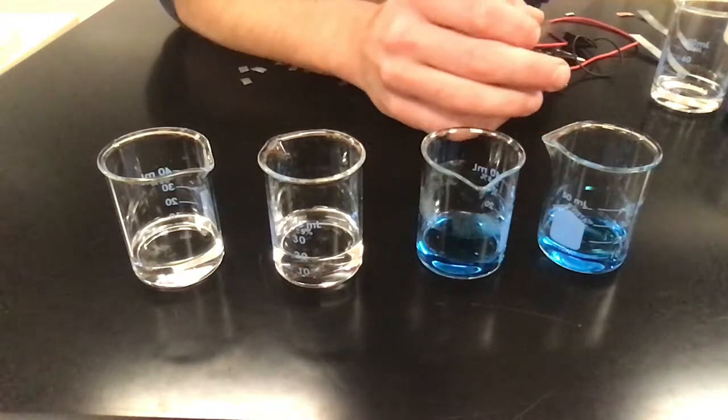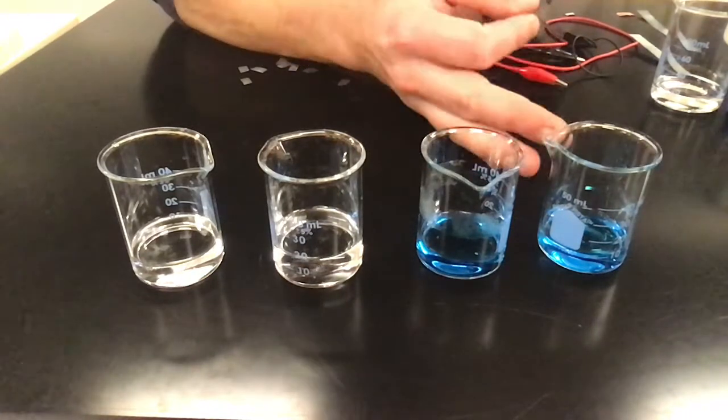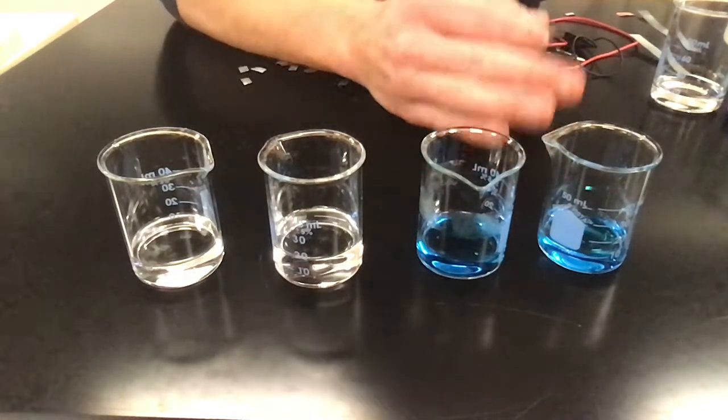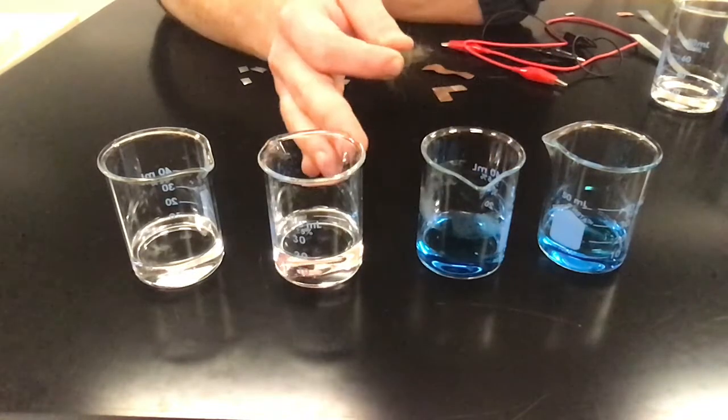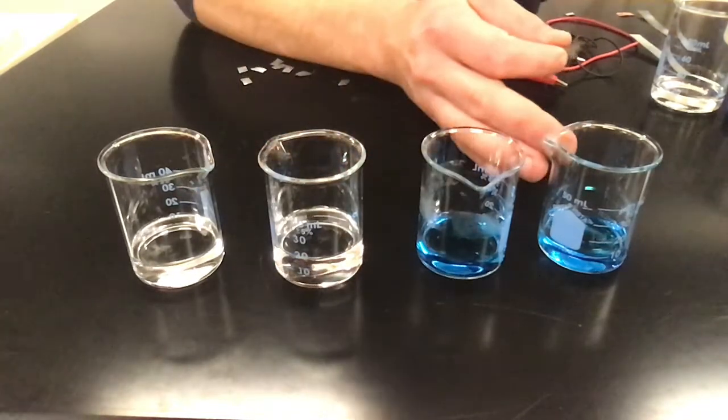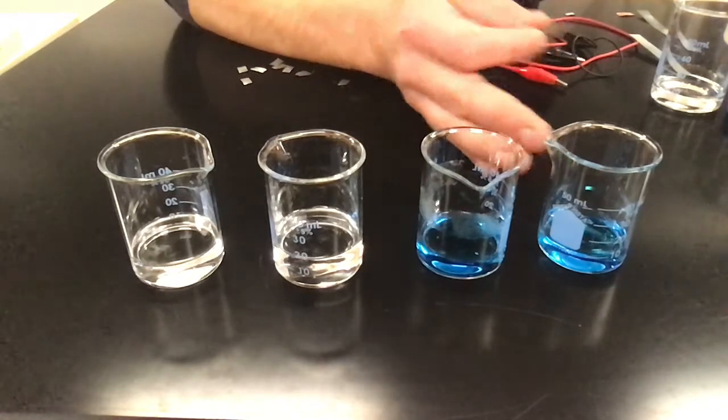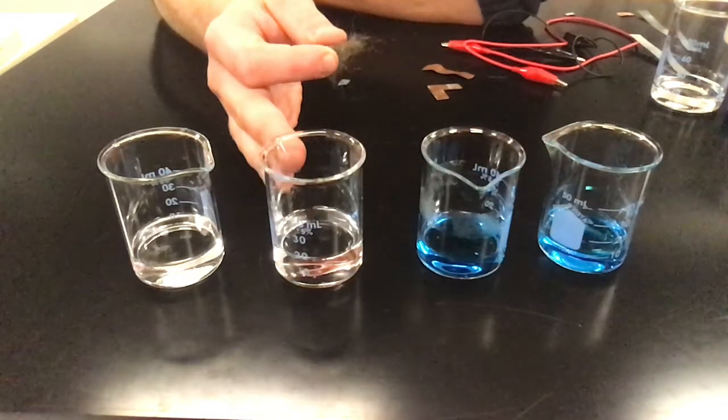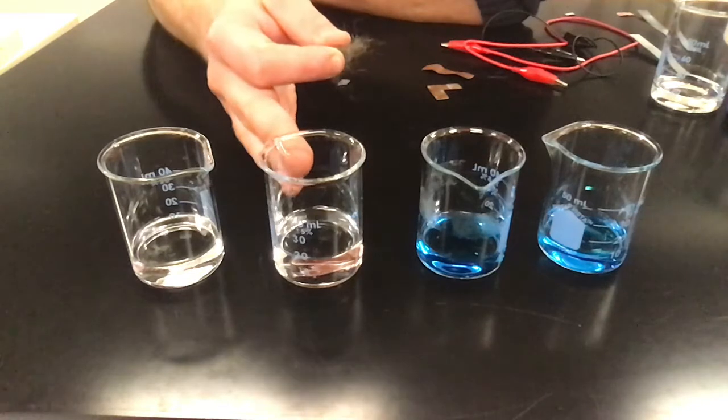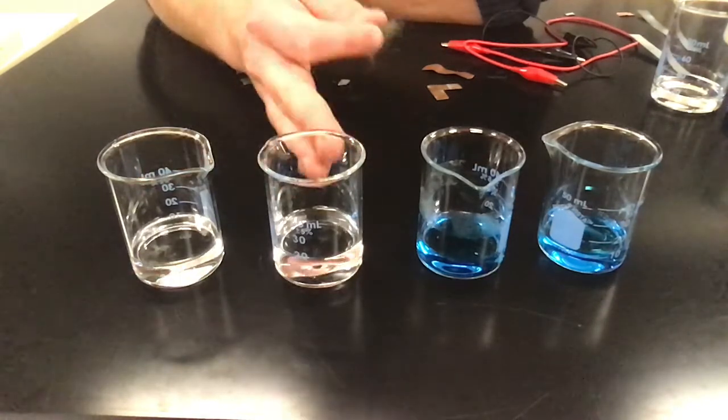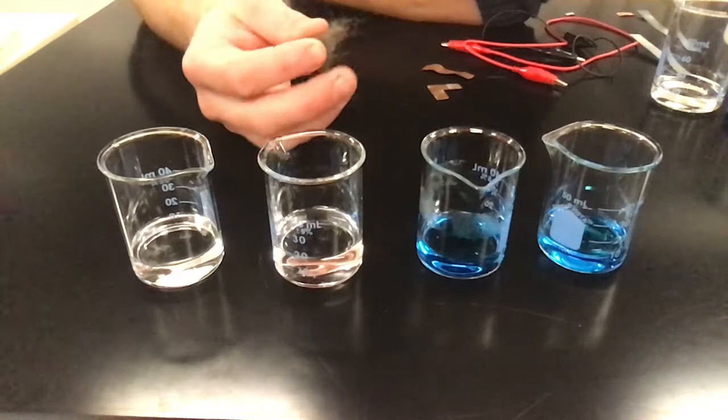These two over here, they might look familiar to you. That bluish color is a pretty good indicator. We have two copper solutions and two zinc solutions. Here we have copper sulfate, copper 2 sulfate, one molar of each. Zinc chloride and zinc chloride, one molar of each.